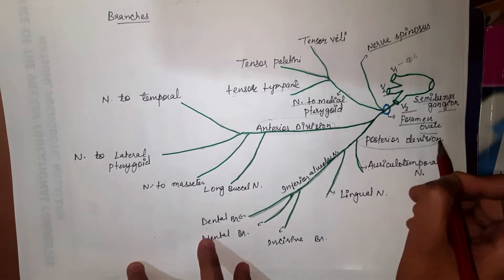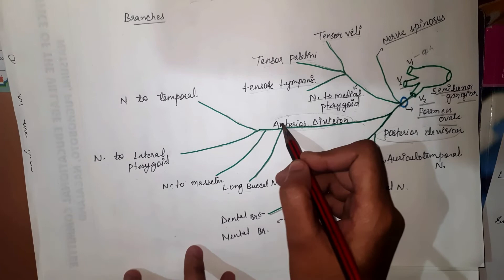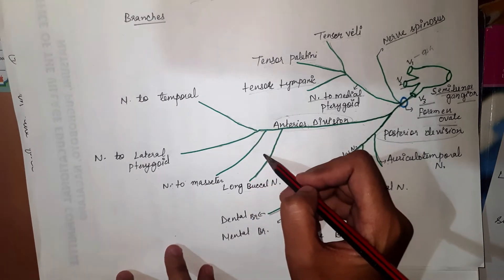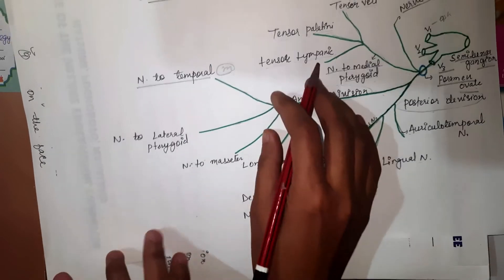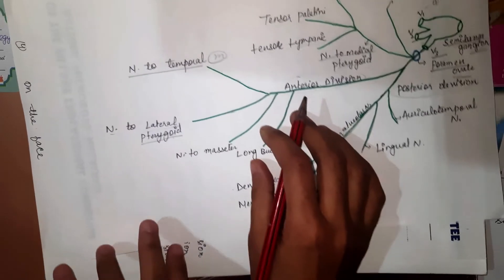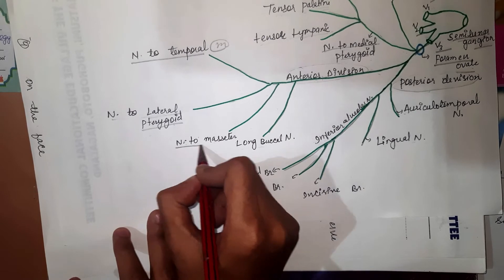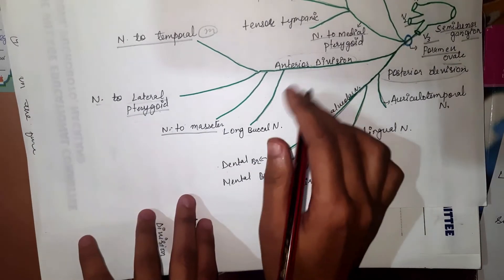In anterior division, it gives four branches: the first branch is nerve to temporal muscles, the second branch is nerve to lateral pterygoid, the third one is nerve to masseter muscles, and the fourth branch is called long buccal nerve.